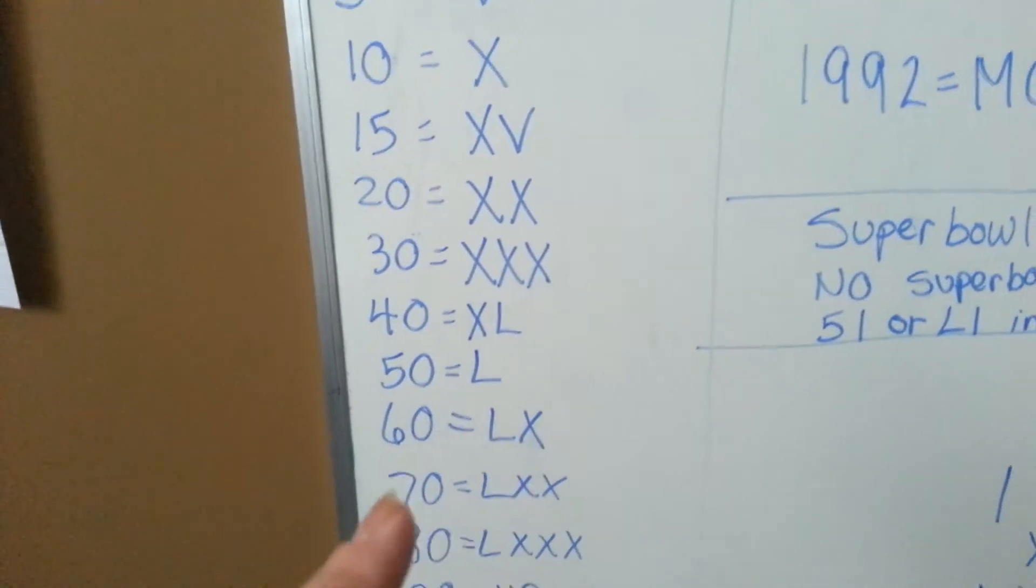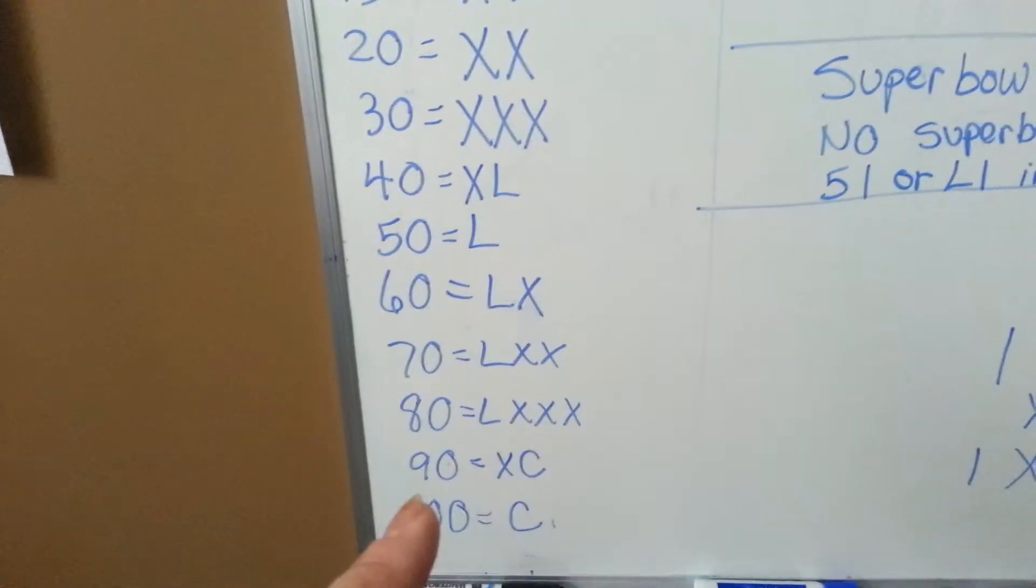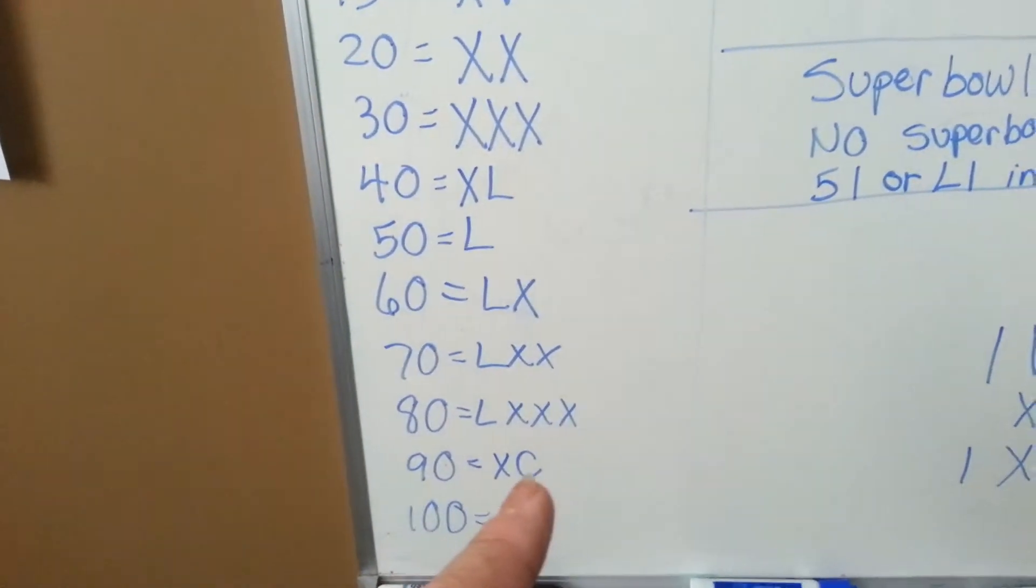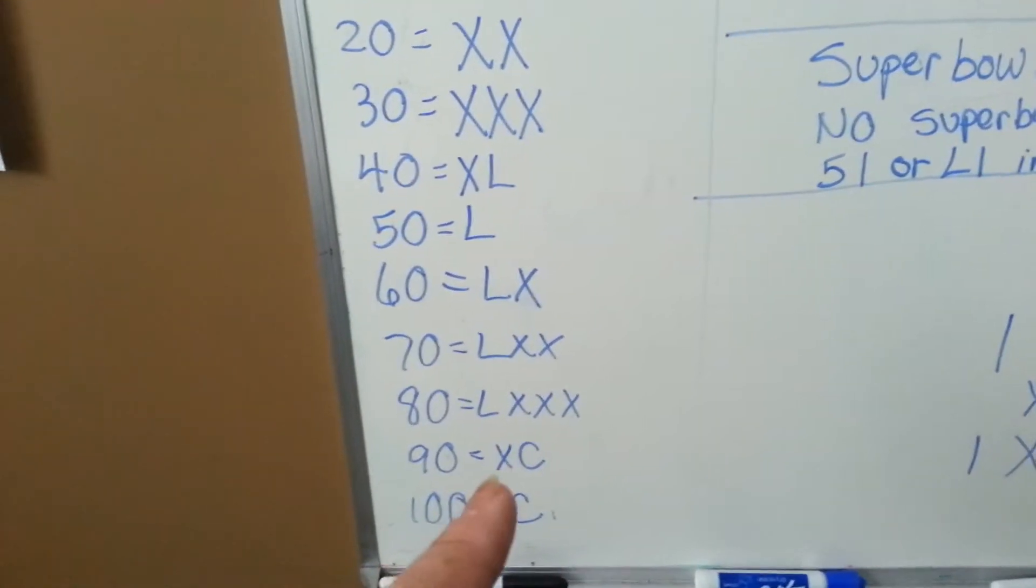60 would be LX, 70 would be LXX, 80 would be an L with 3 X's, and 90 would be an XC because C stands for 100, and you would take 10 away to make 90.